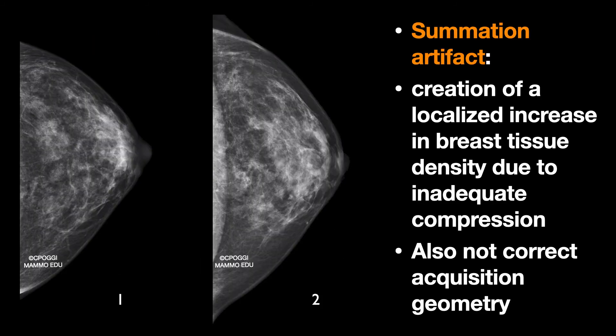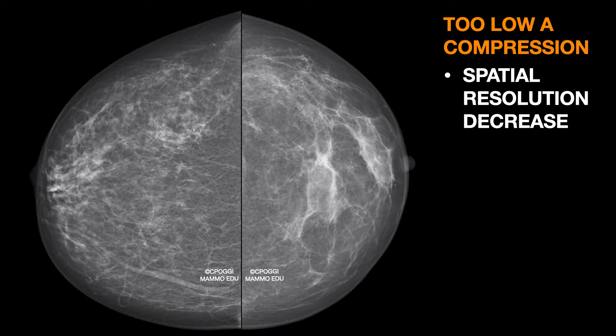This is a typical example of summation artifact in which a localized increase in breast tissue density is created, due to an inadequate compression force applied, but also due to a not correct acquisition geometry. Some other examples of spatial resolution decrease due to an inadequate compression, in the retroareolar zone and in the deep outer quadrant.